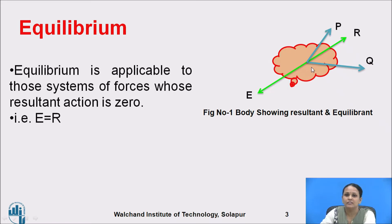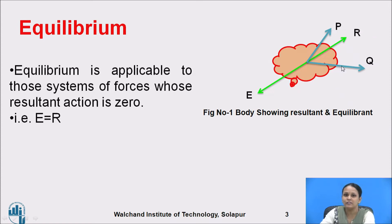Here in this figure, we can see P and Q are the forces acting on the body, and R will be the resultant of forces P and Q. E is the equilibrium force which will keep the body in equilibrium.